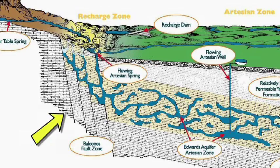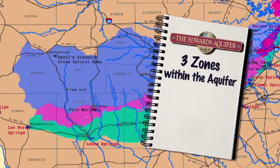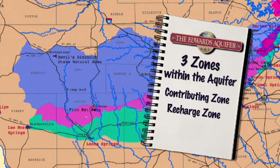We learned about how basic karst aquifers work, but our aquifer — the Edwards Aquifer — is no basic aquifer. It has a series of faults and fractures called the Balcones Fault Zone that give it some special qualities. The faults and fractures break the rock up so we have three special zones within the aquifer: the contributing zone, the recharge zone, and the artesian zone.